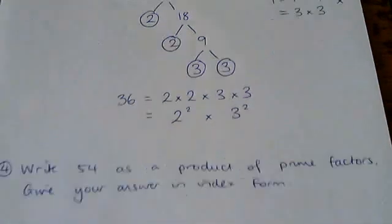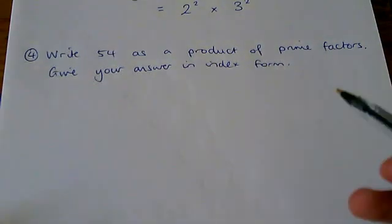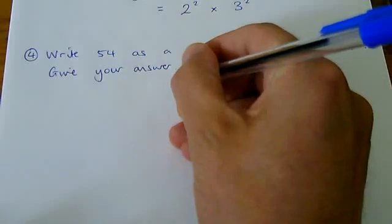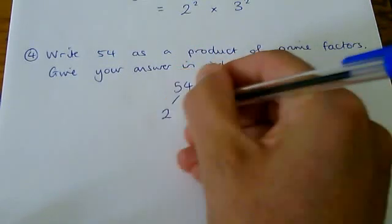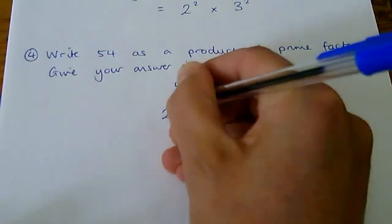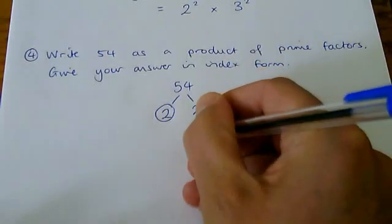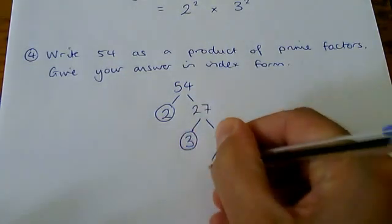If we look at question 4, we've got to do 54 as a product of prime factors. This time we must give our answer in index form. So it's important that we use powers in order to write our answer. So we start with the 54. Again, it's an even number, so dividing by 2 gives you 27. 27 can be written as 3 times 9. And 9 is 3 times 3.